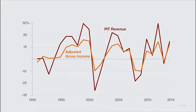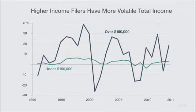Revenue is still much more volatile than adjusted gross income. One reason is because the state imposes a graduated rate structure that taxes higher levels of income at higher rates.